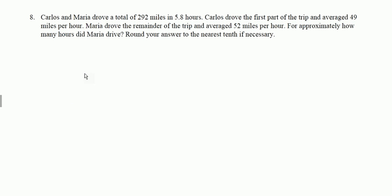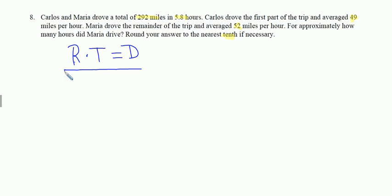Number 8: Carlos and Maria drove a total of 292 miles in 5.8 hours. Carlos drove the first part and averaged 49 miles per hour. Maria drove the remainder and averaged 52 miles per hour. We want to know approximately how many hours Maria drove, rounding to the nearest tenth. This looks like a classic rate times time equals distance problem.